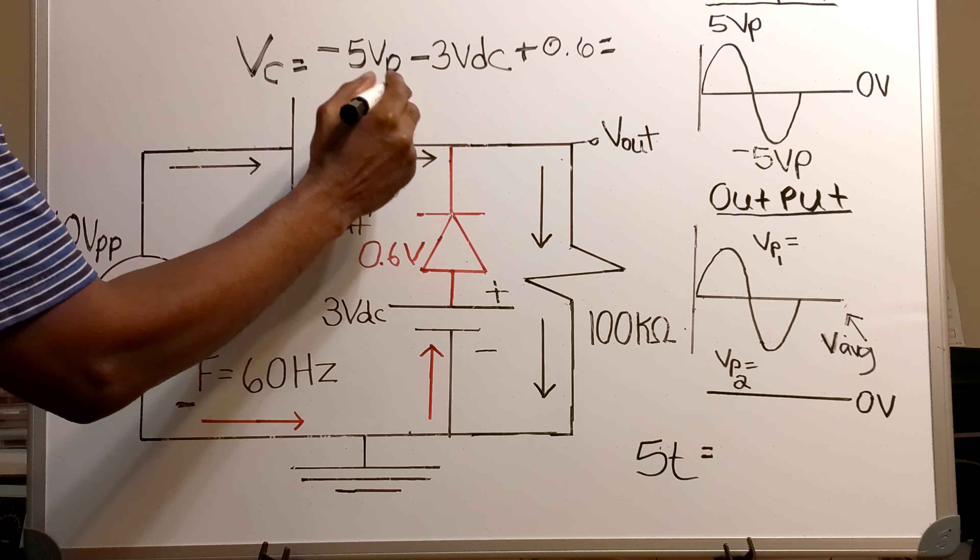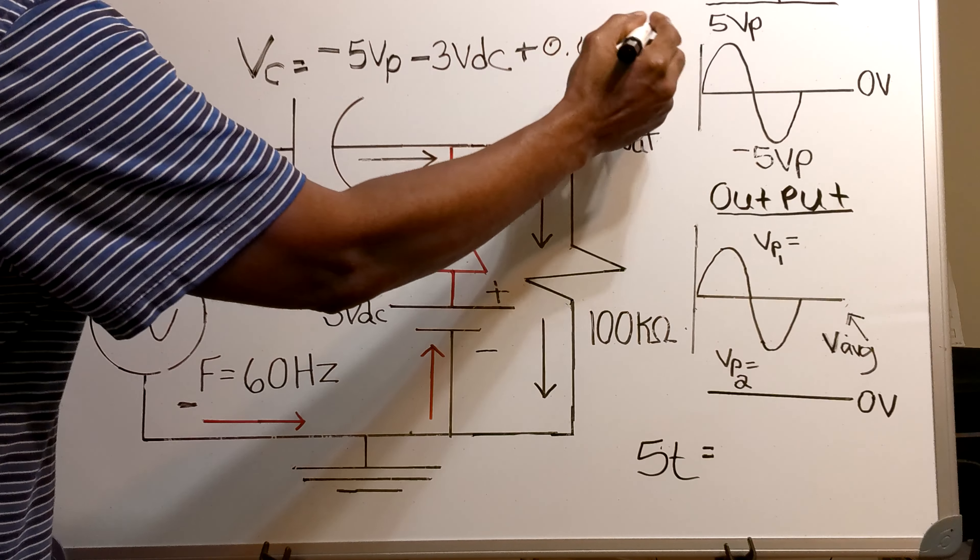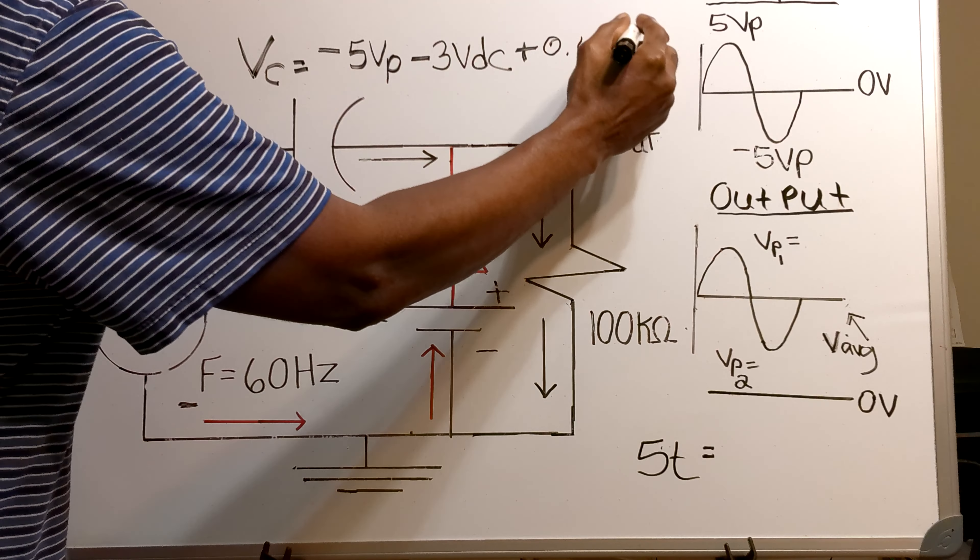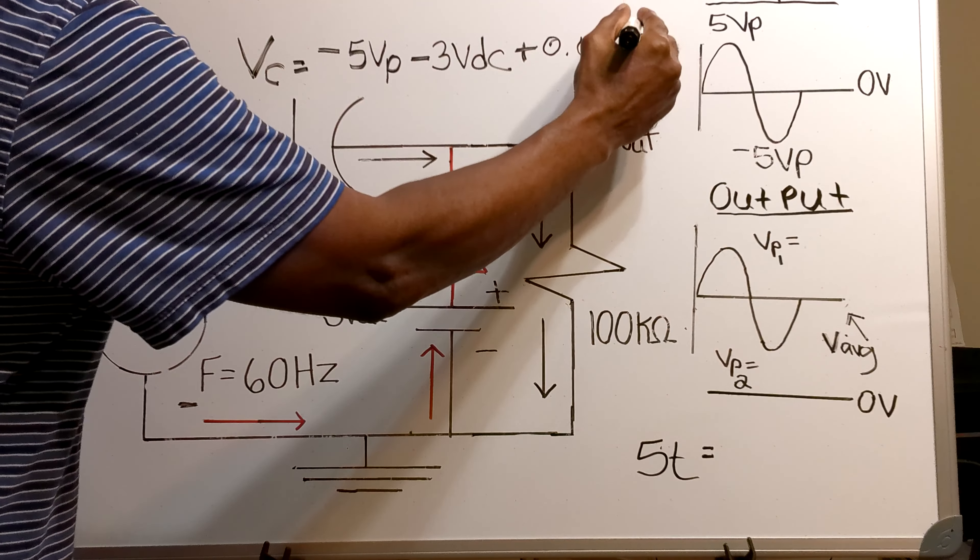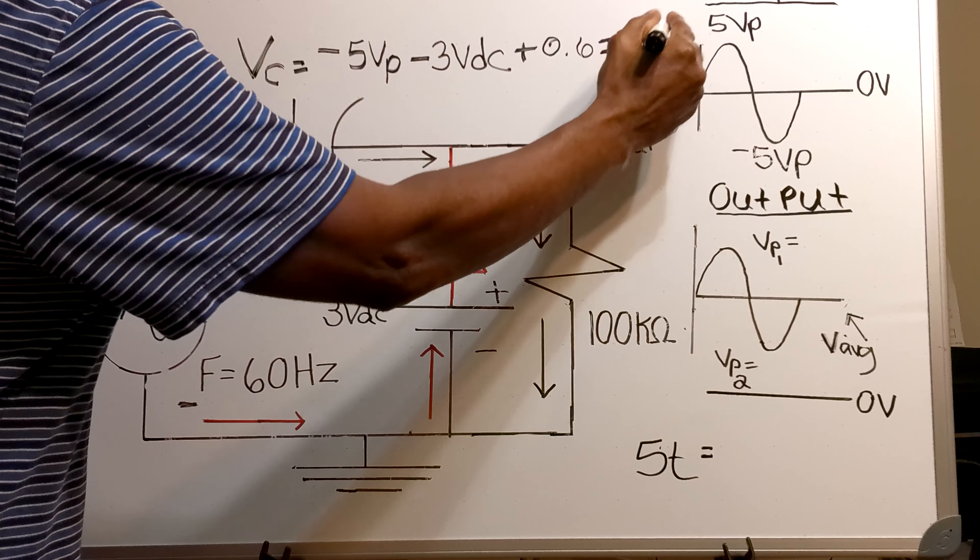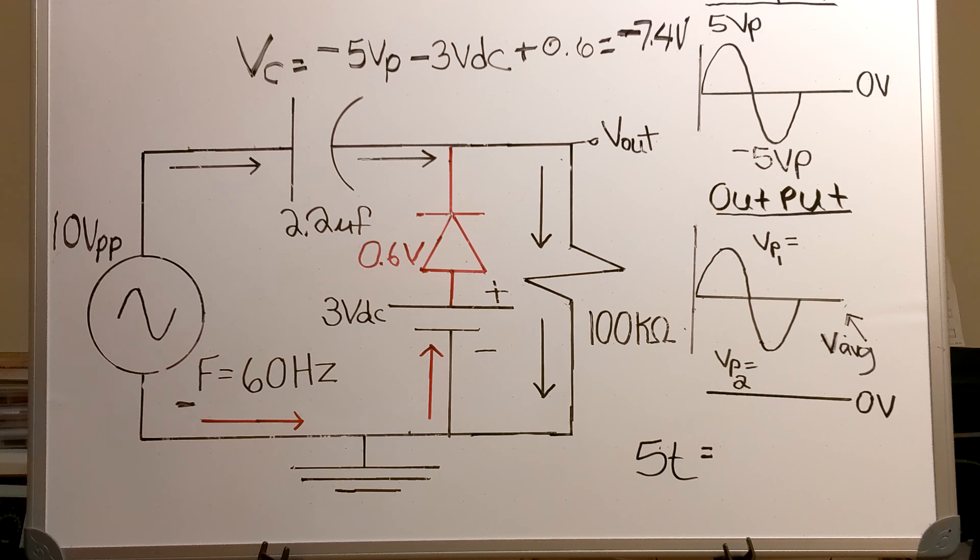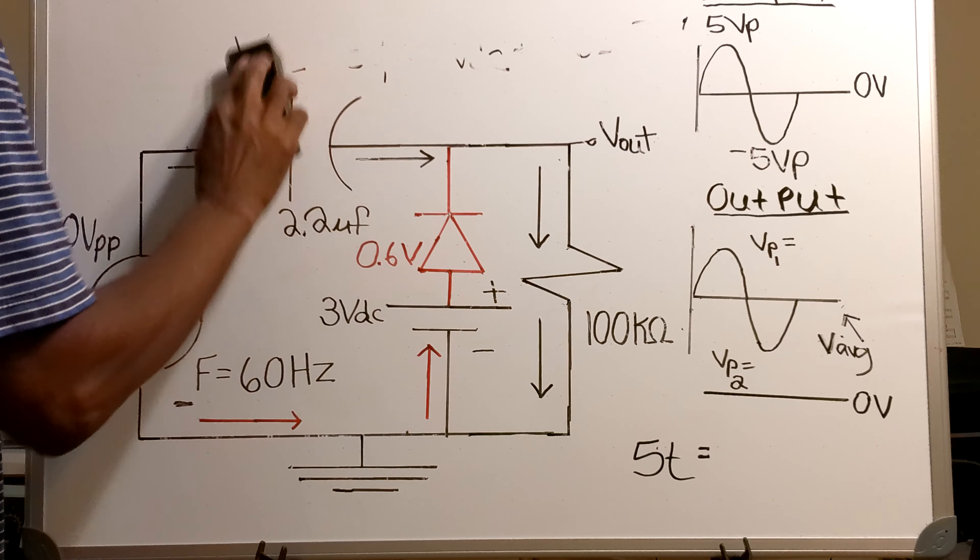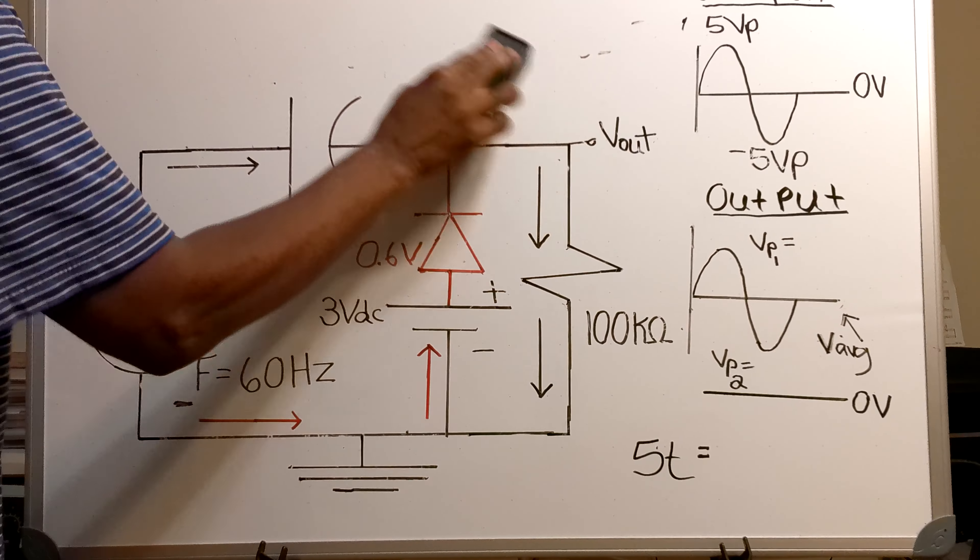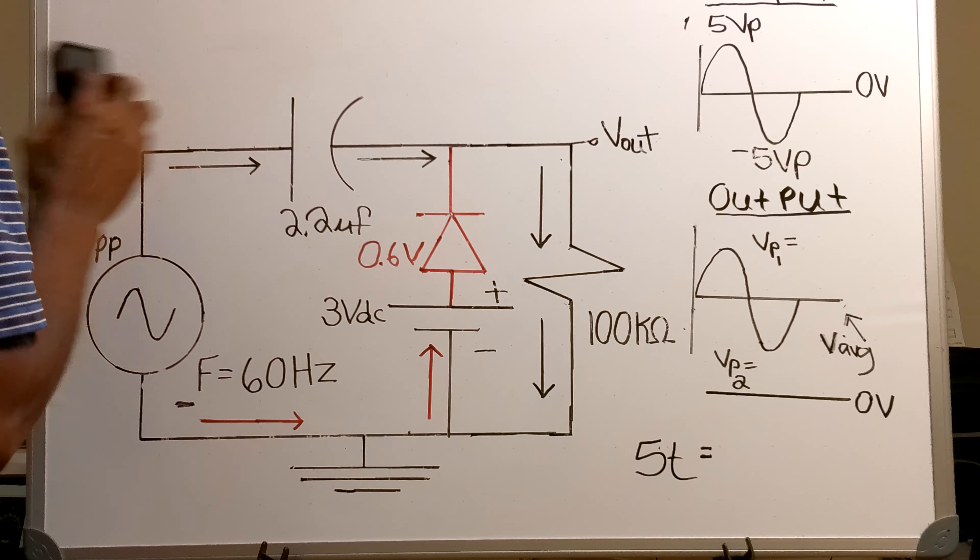Plus a 0.6 volt drop across the diode, and that equals a voltage of negative 7.4 volts.